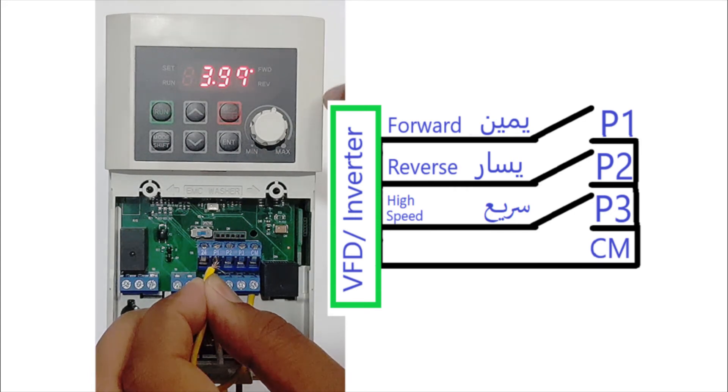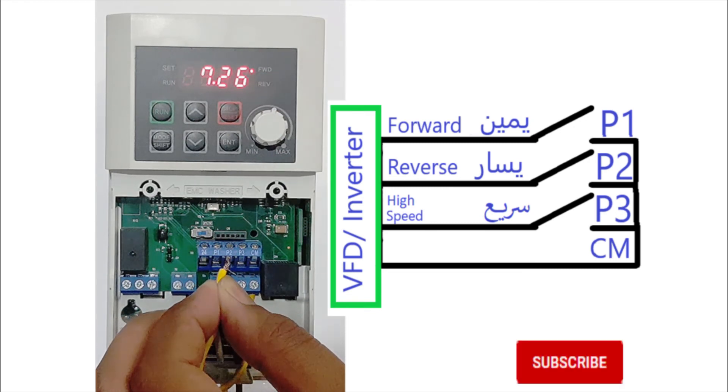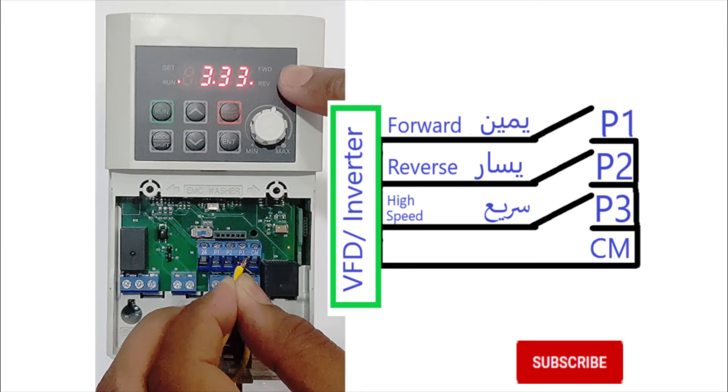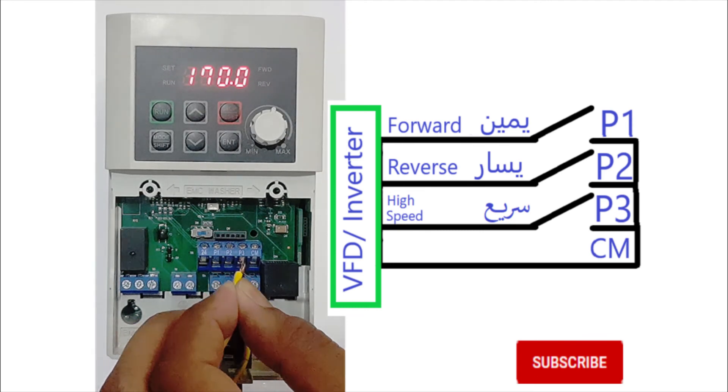This is connected with forward. Now I will switch to reverse. This is the reverse, and P3 is for the high speed, so it is showing high speed.